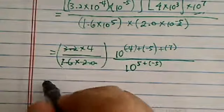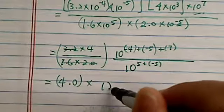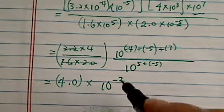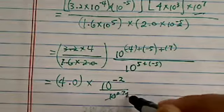Obviously, this one cancels out, so I have four point zero times ten to the, on top I have minus two. On the bottom I have ten to the zero, which is really just one.